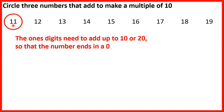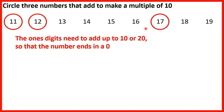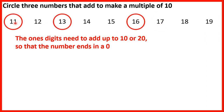So we could have 11, 12 and 17. 1 plus 2 plus 7 is 10, so our number will end in a 0. And 11 plus 12 plus 17 is 40. We could also have 11, 13 and 16.